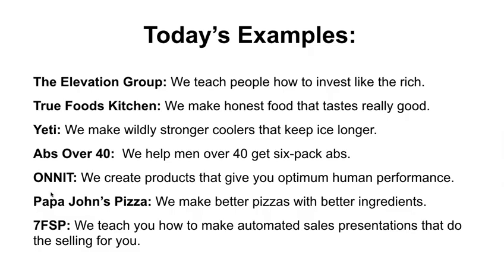Let's go through the examples one more time quickly. The Elevation Group — what does it do? We teach people how to invest like the rich. What do our ideal customers want? They want to become rich. True Foods Kitchen — what do they do? We make honest food that tastes really good. What do their customers want? They want honest food that tastes really good. You can see the theme: your unique angle should match the core desire of your ideal customer.